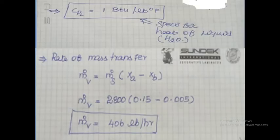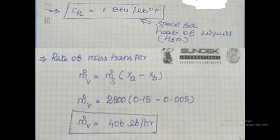Next, we are going to take the specific heat of liquid value. Which component is liquid in our problem? Water. Specific heat of water is a constant value. In terms of FES units, specific heat of water is equal to 1 BTU per pound degree Fahrenheit.